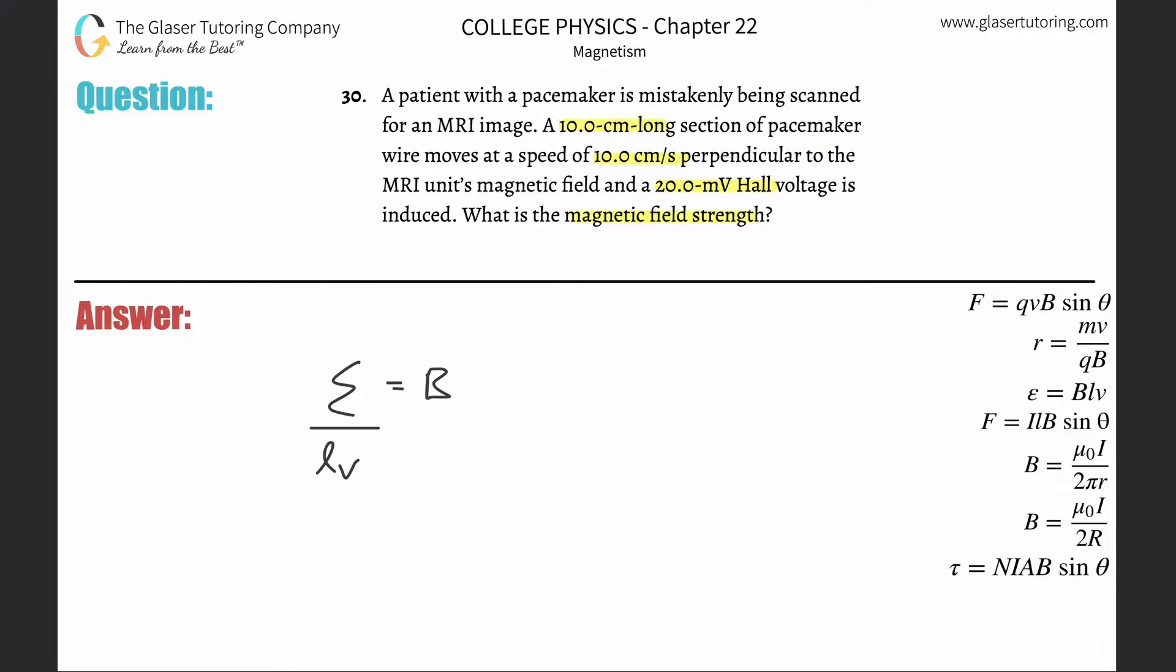Take your Hall voltage that they gave you, 20 millivolts, but we need that in volts, so multiply by 10 to the minus 3. The path length, they told you 10 centimeters long, but we need that in meters, so take 20 and multiply by 10 to the minus 2. For the velocity, centimeters per second, we need that in meters, so take 10 and multiply by 10 to the minus 2.